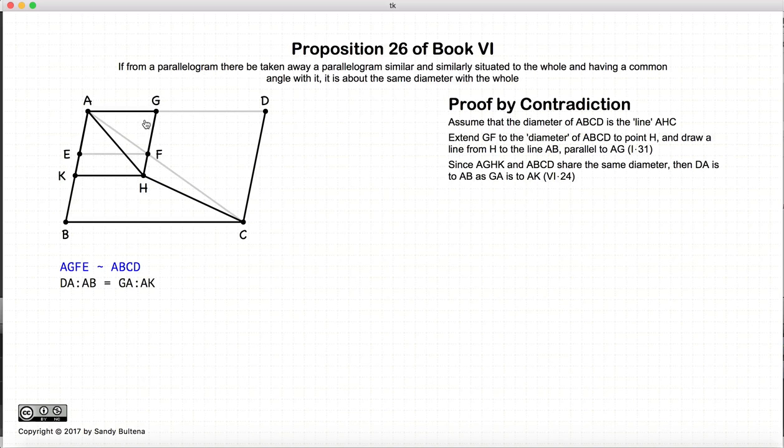Now if we look at this parallelogram AGHK, it's on the diameter of the larger parallelogram. So according to proposition 24, if you have a parallelogram that is on the same diameter as a larger parallelogram then they are similar and as such DA to AB will be equal to GA to AK.